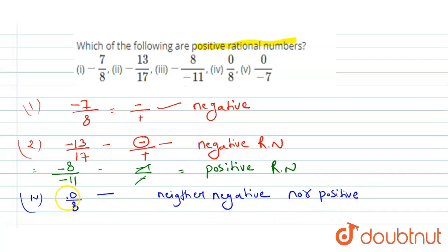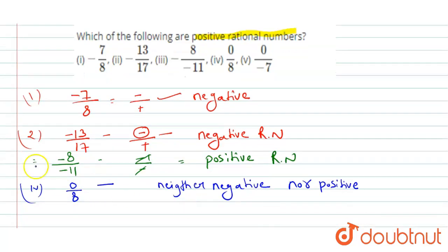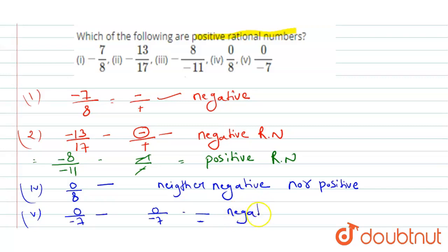It may be possible that along with the 0 there is a negative sign or a positive sign. The fifth one is 0 upon minus 7. The numerator is 0, and there is a negative symbol in the denominator. So only one positive rational number is present — the third one, which is minus 8 upon minus 11. All others are negative. Thank you.